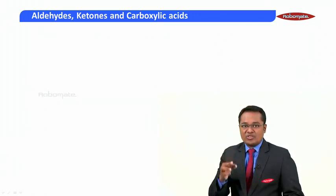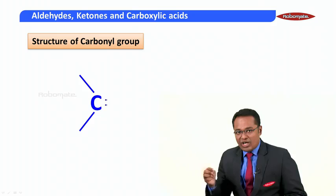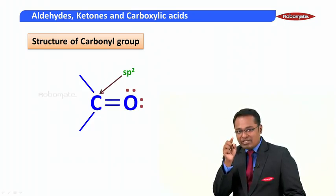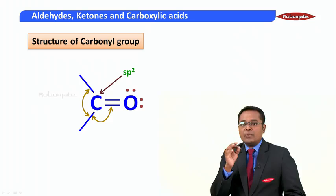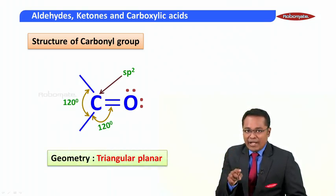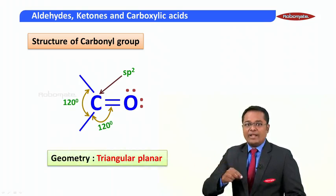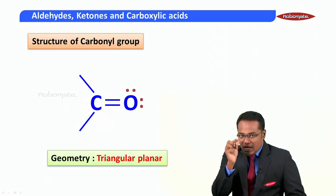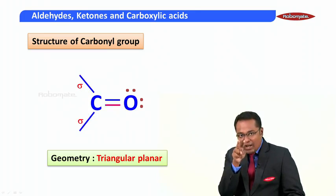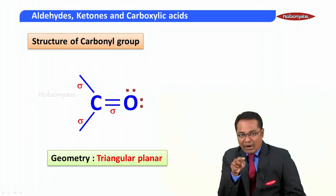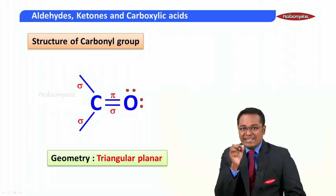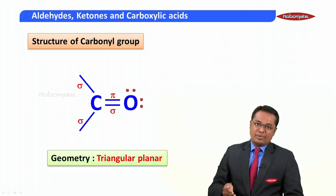Let us look at the structure of a carbonyl group. The carbonyl group has lone pairs on the oxygen atom. The carbon atom is sp2 hybridized, giving a bond angle of 120 degrees. The geometry of this group is trigonal planar. The two single bonds on the carbon atom are sigma bonds, and between the carbon and oxygen, one bond is a sigma bond and the second is a pi bond.